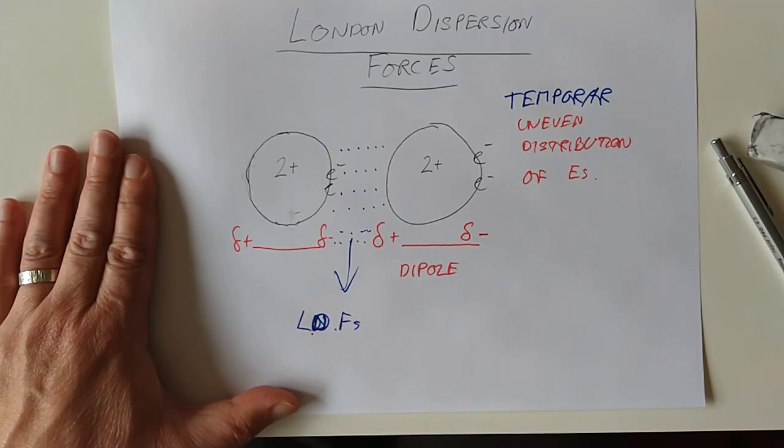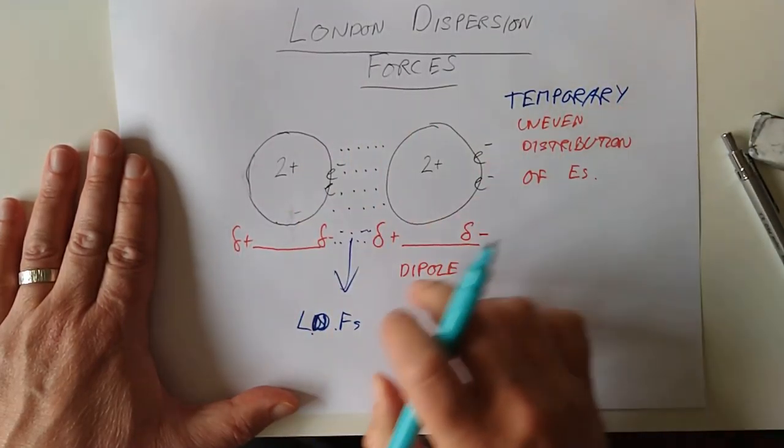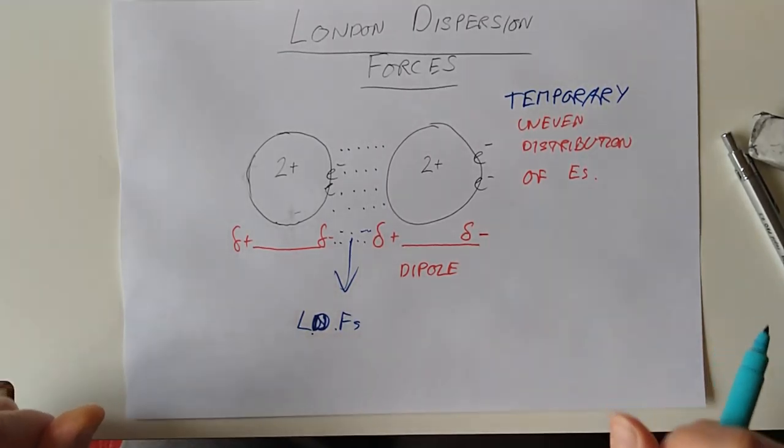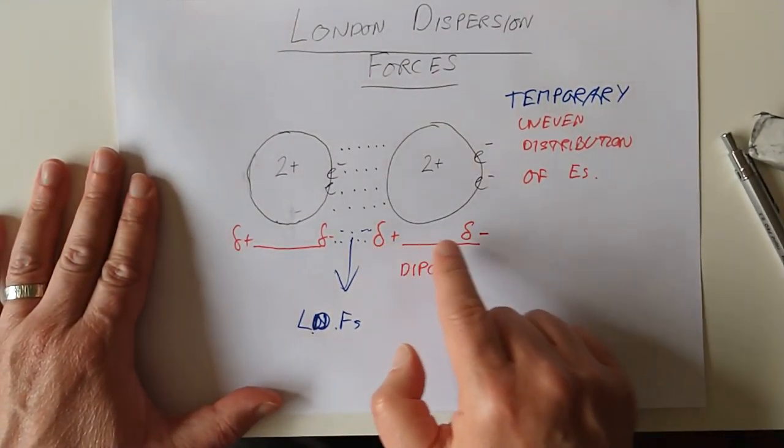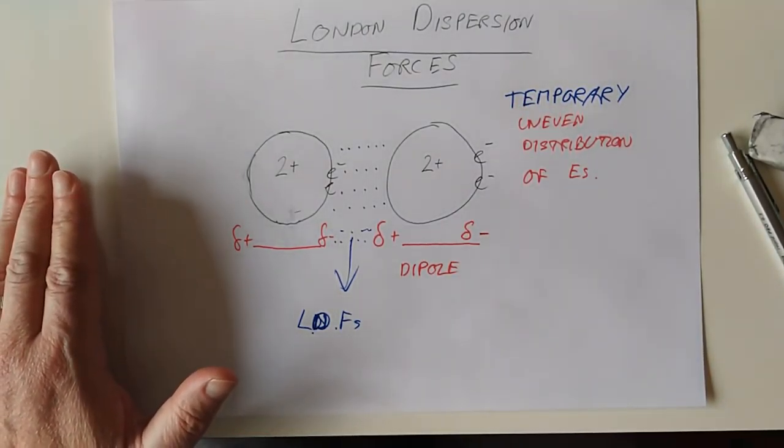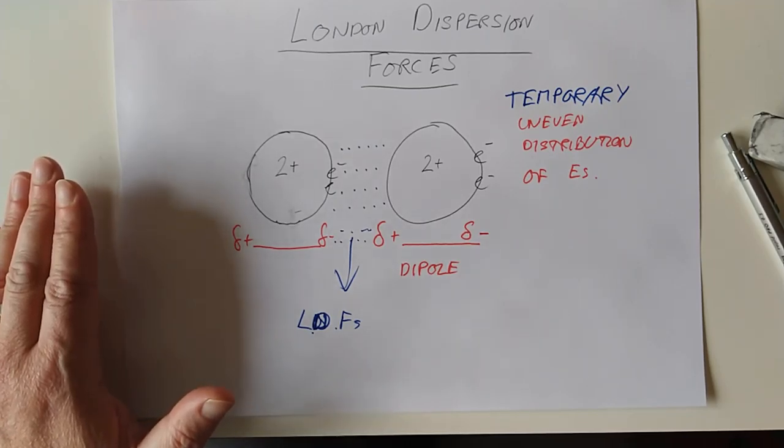There's a keyword missing here - temporary. I did say these electrons are constantly on the move. This is here for a fraction of a second and then it's gone again. So they make and break. Because they are very small and only temporary, these forces are feeble and very easily broken.